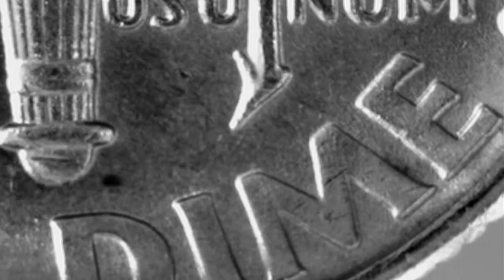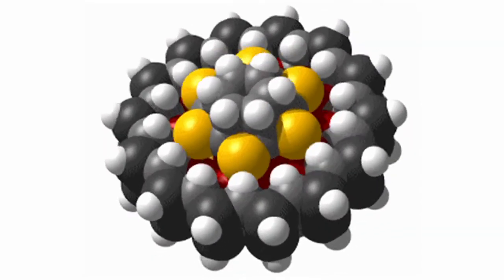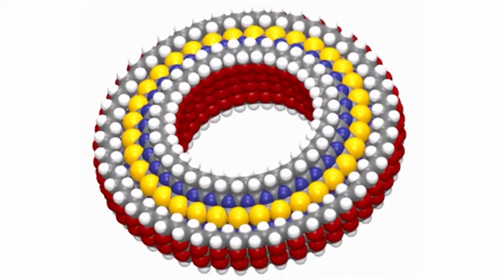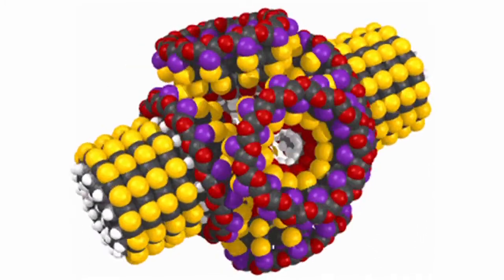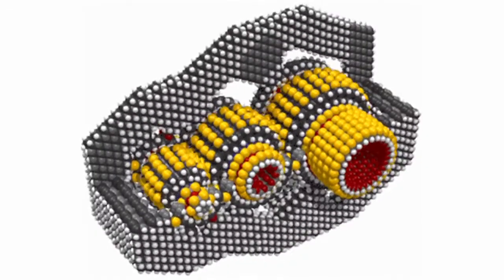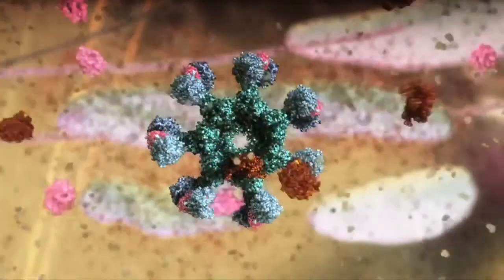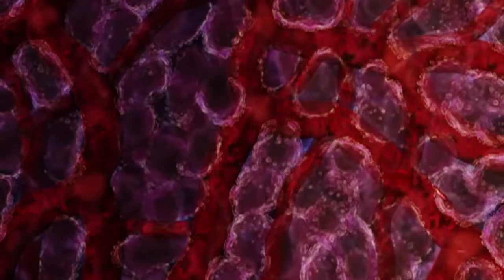Now scientists are looking at ways to create machines at the smallest scale possible, using atoms as their building blocks. Some researchers believe that we could construct molecular machines that could make anything we wanted — if this happens, it will revolutionize our lives. We know that molecular machines can work because they're in every cell of our bodies, working away right now: turning food into energy, fixing damage, keeping you warm, and making new cells. You are already a masterpiece of molecular nanotechnology.